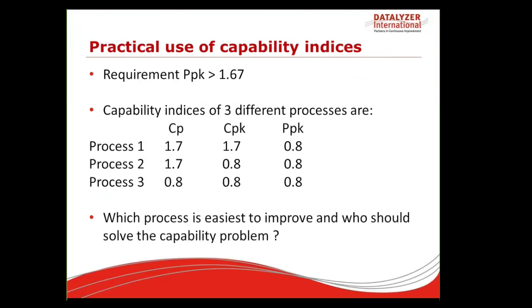The typical capability requirement in most industries is more than 1.67. I have three example processes. Process one: CP = 1.7, CPK = 1.7, PPK = 0.8. Process two: CP = 1.7, CPK = 0.8. Process three: CP = CPK = PPK = 0.8. From these three capability values, I can immediately say what the problem is, how it can be fixed, what is easiest to fix, and who in the organization is responsible. The question is: which process is easiest to improve to get PPK to 1.7, and who is responsible for fixing it?